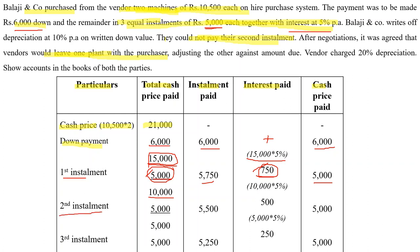For the second installment, the cash price component is again 5,000. Interest is calculated on the outstanding balance of 10,000 at 5%, giving 500 rupees. The installment amount is cash price plus interest. The outstanding balance becomes 5,000. For the third installment, the cash price is 5,000, and interest is calculated on the outstanding balance to get the installment amount. For a detailed explanation of how to calculate interest, watch the linked video in the description box.